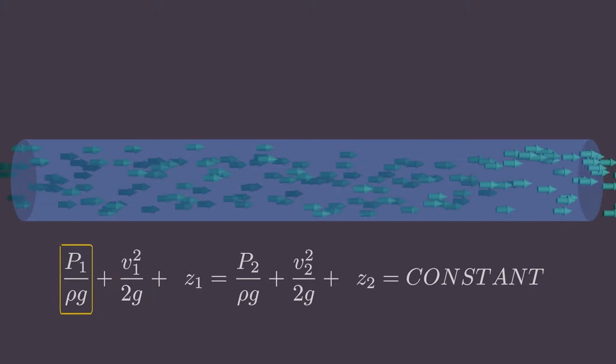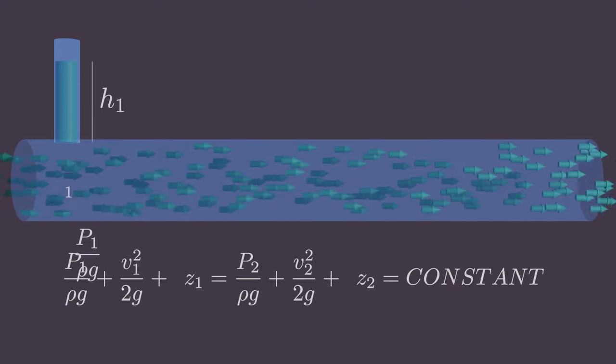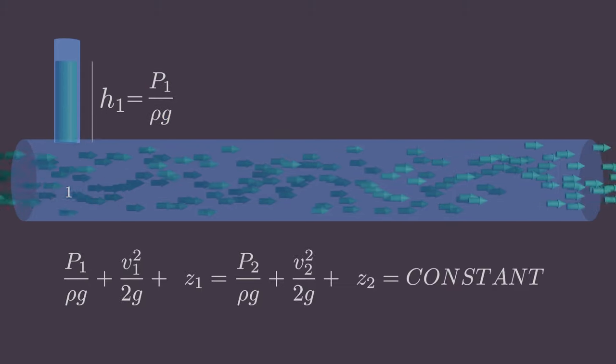First one is the pressure head. It represents the height of a fluid column that produces the static pressure P.